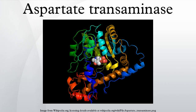X-ray crystallography studies have been performed to determine the structure of aspartate transaminase from various sources, including chicken mitochondria, pig heart cytosol, and E. coli. Overall, the three-dimensional polypeptide structure for all species is quite similar. AST is dimeric, consisting of two identical subunits, each with approximately 400 amino acid residues and a molecular weight of approximately 45 kDa. Each subunit is composed of a large and a small domain, as well as a third domain consisting of the N-terminal residues 3 to 14. These few residues form a strand which links and stabilizes the two subunits of the dimer.